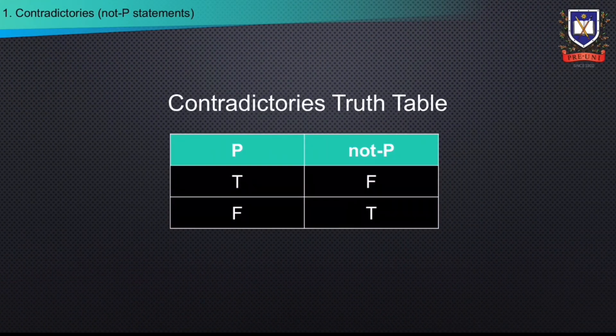This is the truth table for contradictories. If P is true, the contradictory would be false. If P is false, then the contradictory would be true.